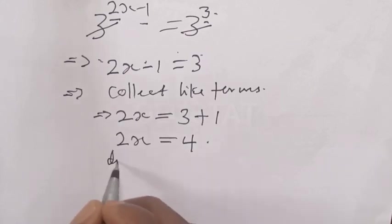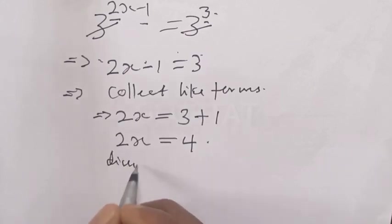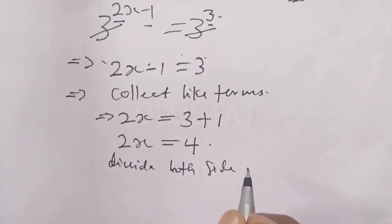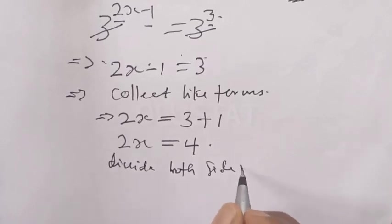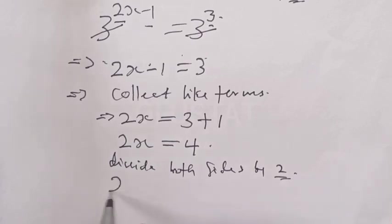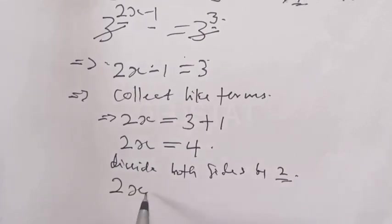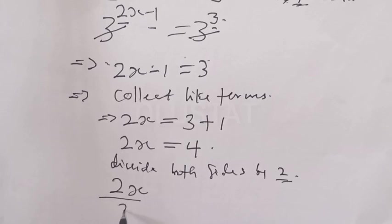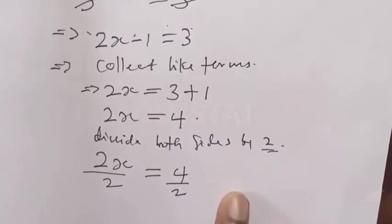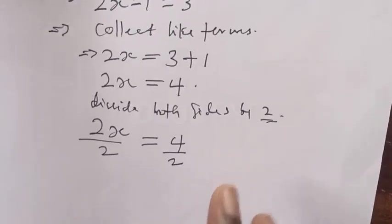We have 2x minus 1 is equal to 3. We need to solve for x, so we divide both sides by 2.